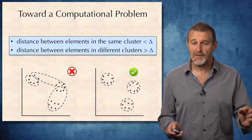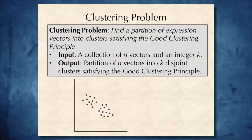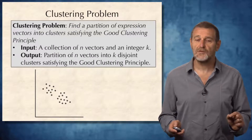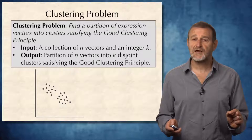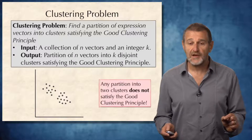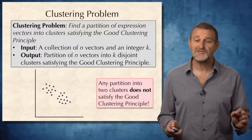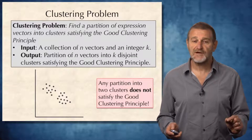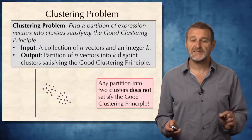Therefore, we come up with the following clustering problem: find a partition of expression vectors into clusters that satisfies the good clustering principle. But for the example below this slide, it turns out that no matter how much we try, there is no partition satisfying the good clustering principle for this dataset.